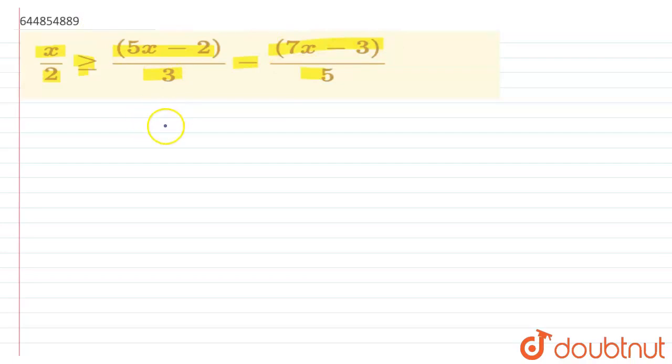We have to solve this inequality. I can write it as x/2 which is greater than or equal to - if I take the LCM and cross multiply, I can write 5 times this one, which is 5x minus 2, minus 3 times this one, 7x minus 3.